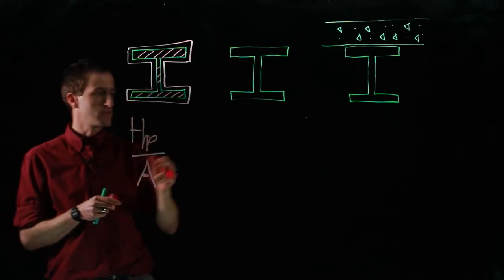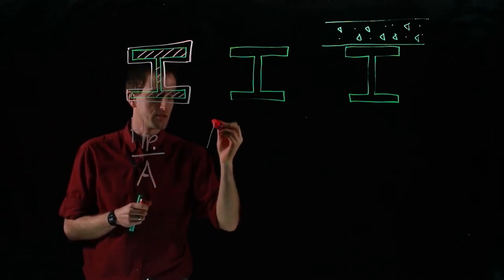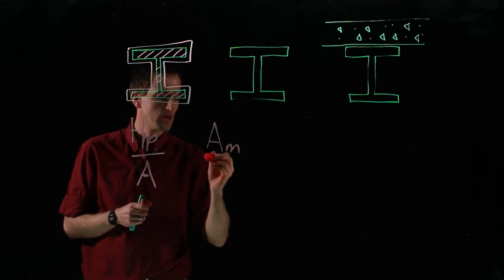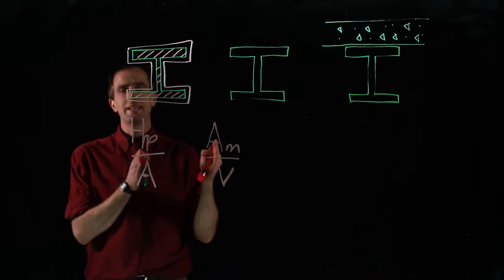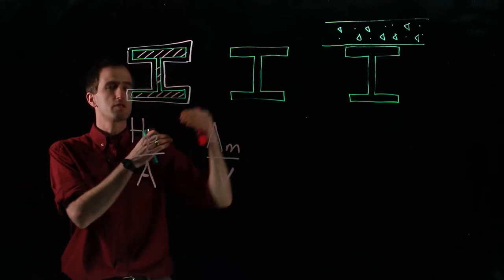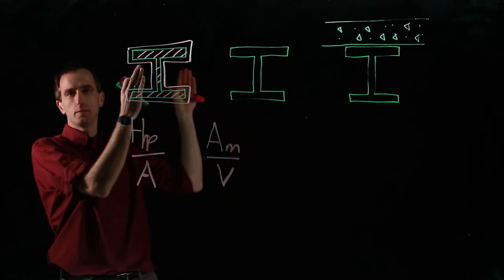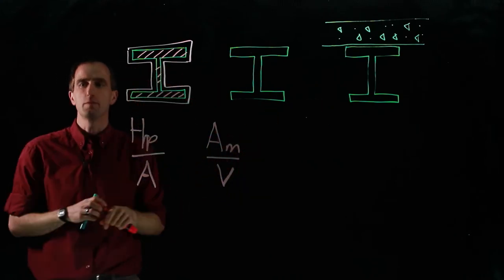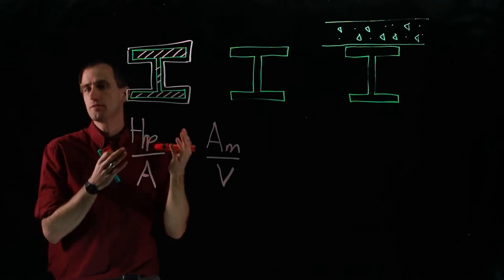Other codes refer to it in different ways. The Eurocode, for instance, refers to it as the area of the member over volume. These two concepts are identical except that this uses a per meter length, so it would be one meter in or one meter deep in and out of the page.